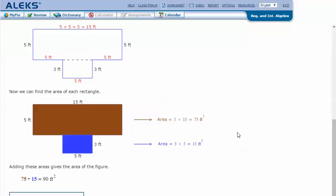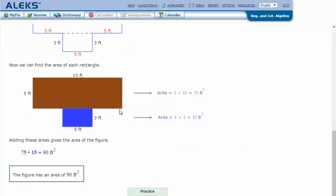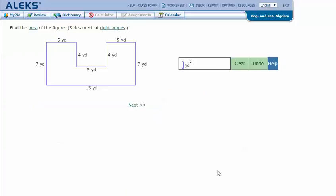Now we can find the area of each rectangle. 15 times 5 is 75, and 3 times 5 is 15. Then we add 75 plus 15 and get 90 feet squared for the area of this shape.